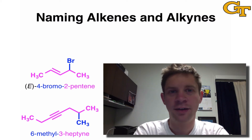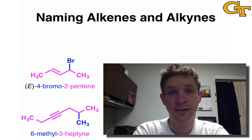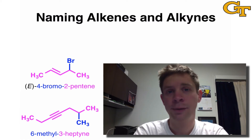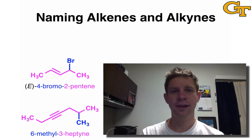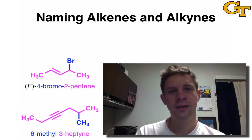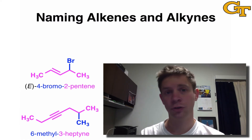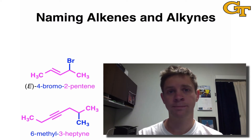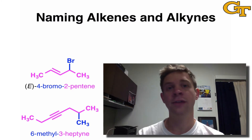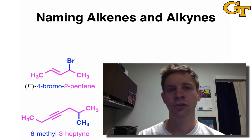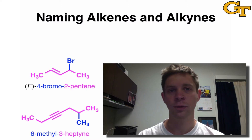So far, we've only named compounds containing carbon-carbon single bonds, but alkenes and alkynes are organic compounds that contain carbon-carbon double and triple bonds. When it comes to naming these compounds, we have the interesting issue of how to name a functional group that spans two or more carbons. Thus far, we've only looked at naming substituents bound to a single carbon, which was relatively straightforward. In this video, we'll explore how the IUPAC nomenclature convention addresses this issue, and we'll also see how the process for naming alkenes and alkynes is very similar to the convention we've seen already.